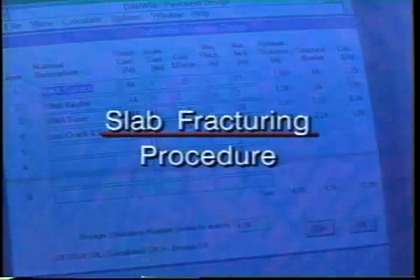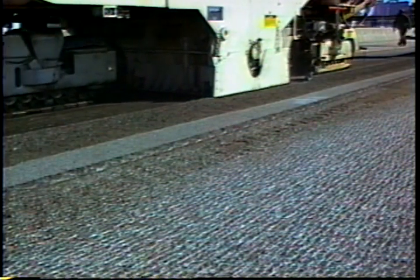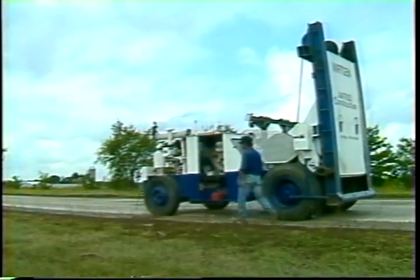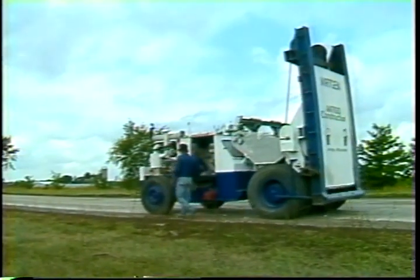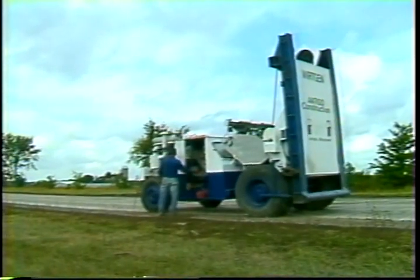Let's take a closer look at the actual slab fracturing process. First, any existing asphalt overlay is removed, and any existing drainage problems must be corrected. Then the slabs are fractured. Proper cracking of the concrete requires that the entire depth of the slab be fractured. The selection of equipment is based on its ability to fracture the full depth of the slab without excessive spalling of the surface.